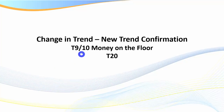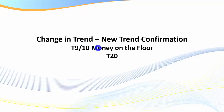For change in trend or new trend confirmation, we've got the T9 and the T10. The only real difference between the T9 and T10 is that with the T9 it's where we have the Super Scalper plot to confirm the new trend. The 'money on the floor' strategy has been around for many many years - it's a great strategy. Along with the T20 - that's another strategy I want you to learn very early on, not just as a trading strategy but because it will confirm a new trend and it's very accurate.